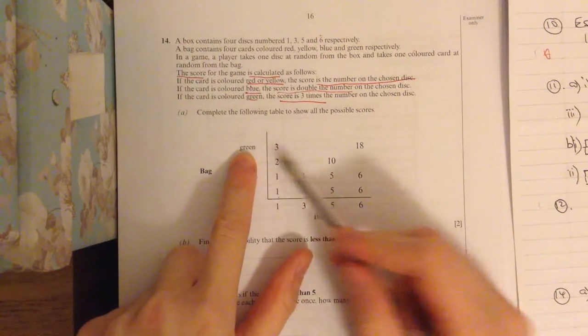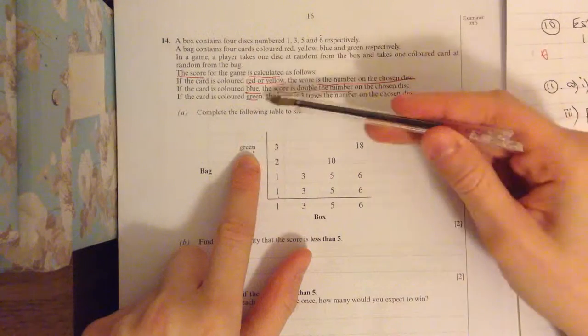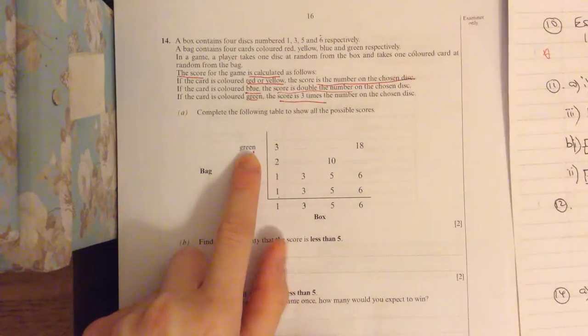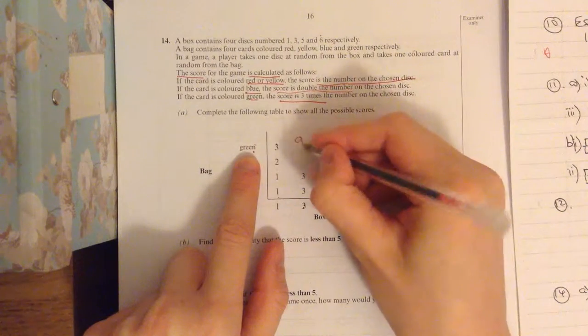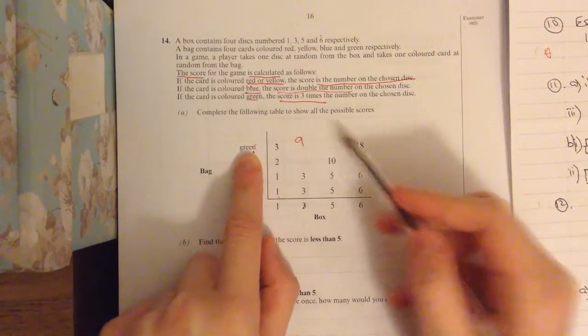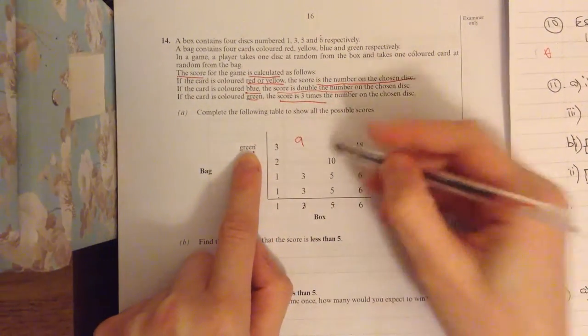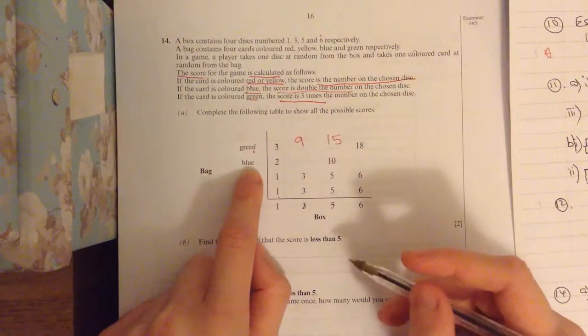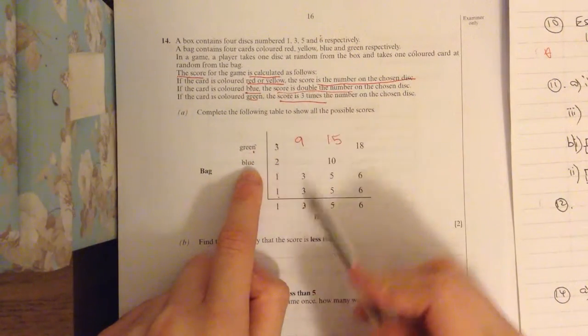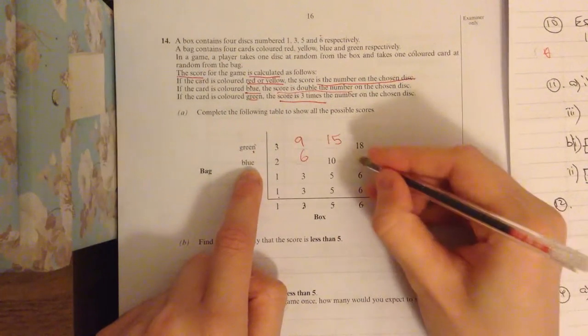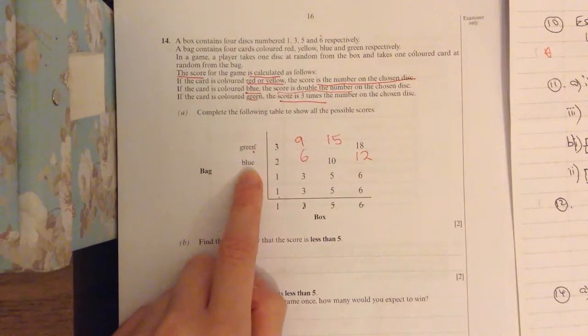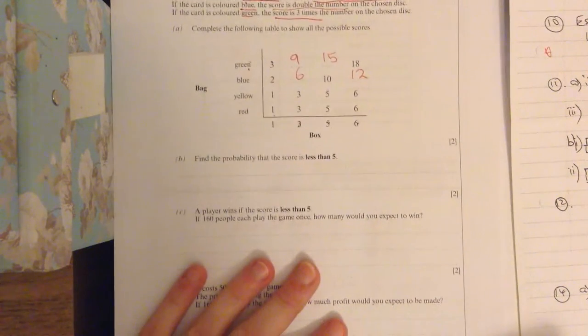Right then, it says, we've got picked out a green. So we look at our thing, it says the green, the score is three times the number. So three times three, it's going to give me nine. Another green, three times the number, three times five, it's going to give you 15. Blue, the score is double the number. So we've got three there, it's going to be a six. And a six there, it's double, that's going to be 12. And there's all things filled in.